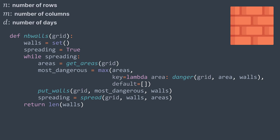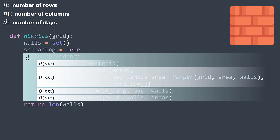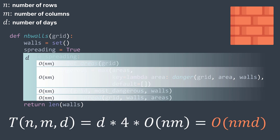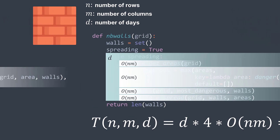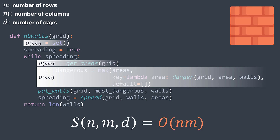For time complexity, defining n as the number of rows, m as the number of columns, and d as the number of days until spread stops: getting areas is O(n×m), identifying the most dangerous one is O(n×m), putting walls is O(n×m), and spreading is O(n×m). With d iterations, total time complexity is O(n×m×d). For space complexity, we use extra space for walls, flood fill, affected cells, and areas — none exceeding O(n×m) each — giving O(n×m) space complexity.